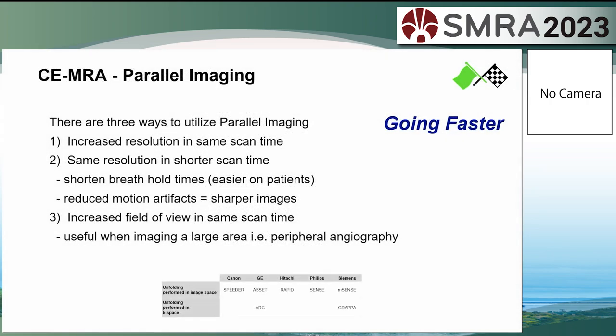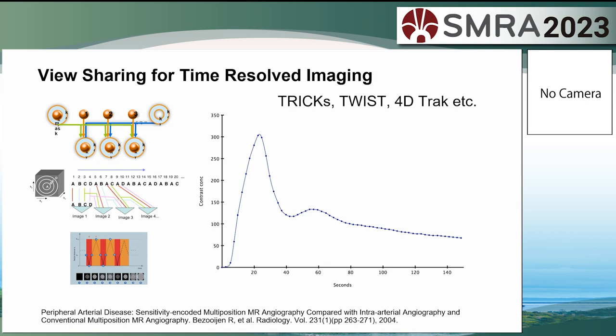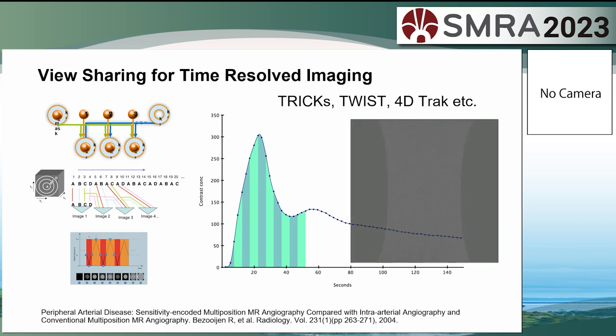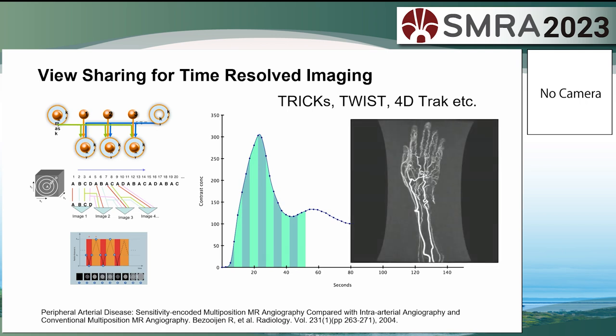Parallel imaging can be used for increasing spatial resolution in the same scan time, the same resolution in a shorter scan time, or combinations, or increasing field of view. There are various methods: 4D Track from Philips, Trix from GE, and Twist from Siemens. Effectively, it allows many bites at the cherry as contrast goes through the region of interest, giving us dynamic imaging — such as this patient's forearm and hand.